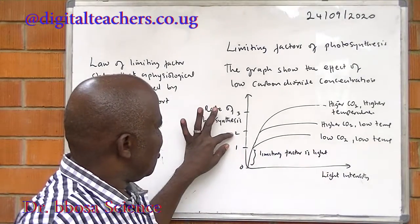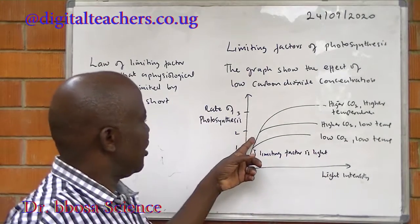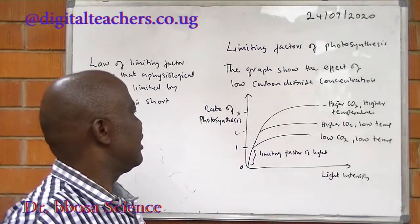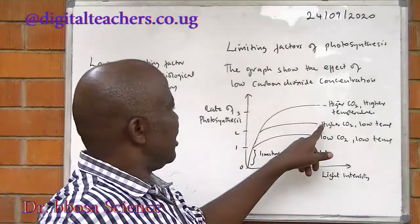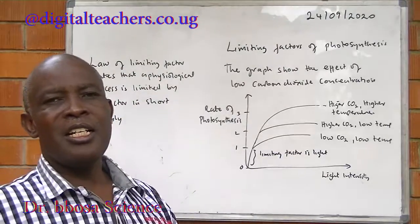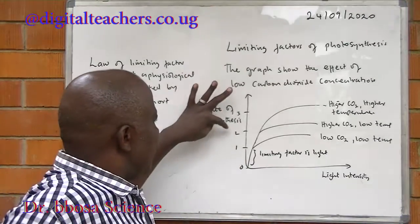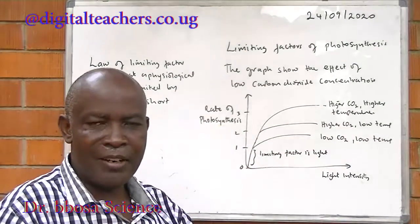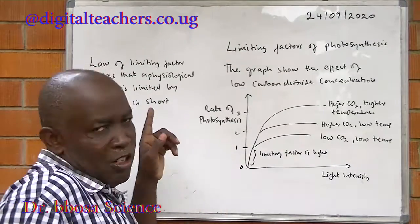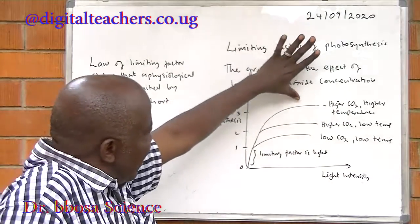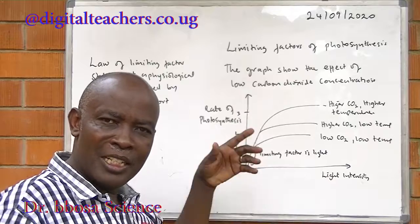Between points 1 and 2, carbon dioxide is the limiting factor because increasing the concentration of carbon dioxide increases the rate of photosynthesis. After point 2, carbon dioxide ceases to be the limiting factor, because increasing the concentration of carbon dioxide ceases to increase the rate of photosynthesis. Between points 2 and 3, temperature is the limiting factor because increasing the temperature increases the rate of photosynthesis. After point 3, chlorophyll likely becomes the limiting factor.